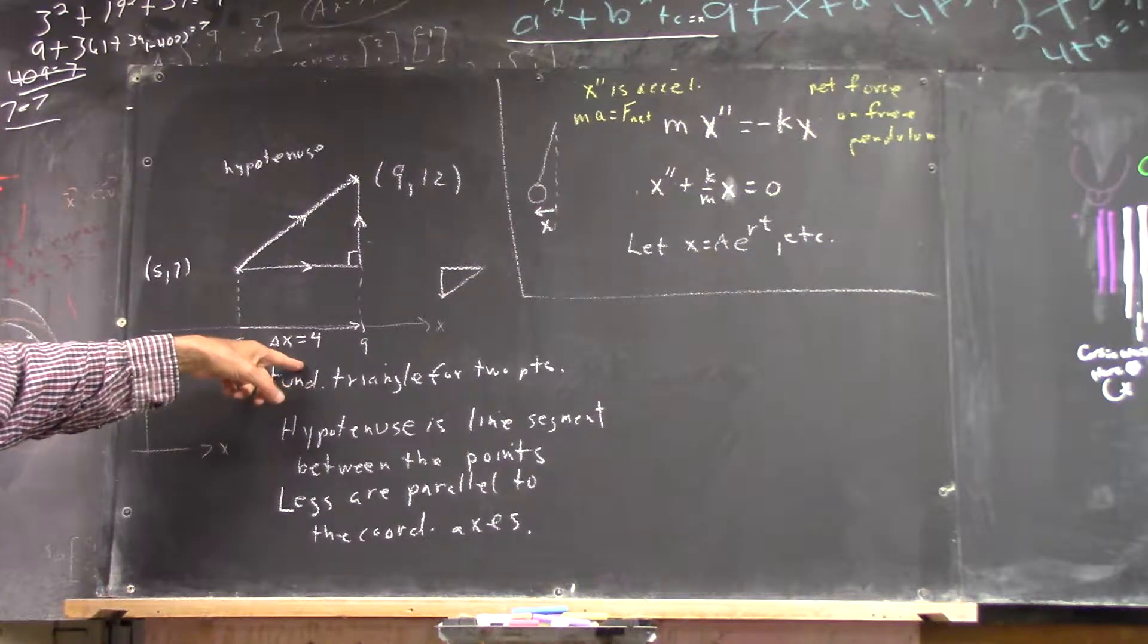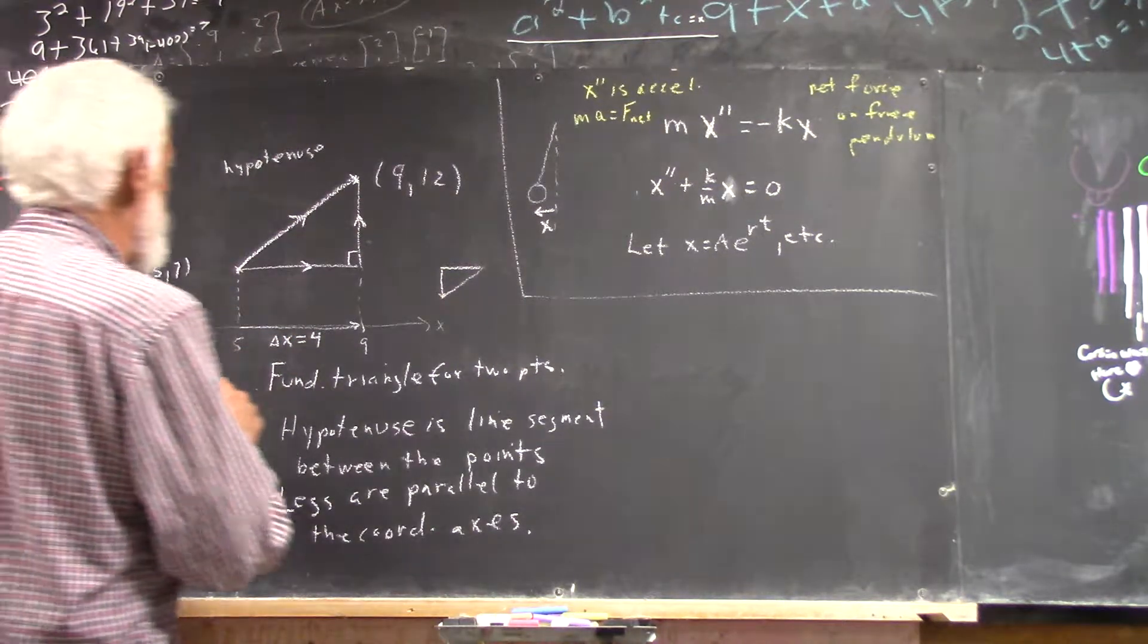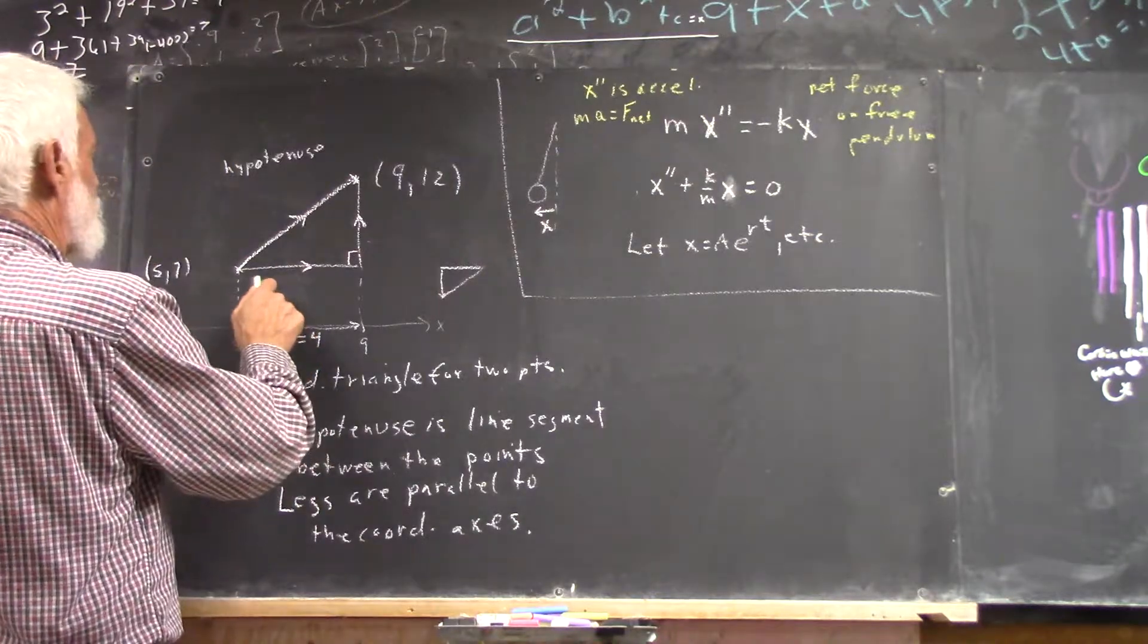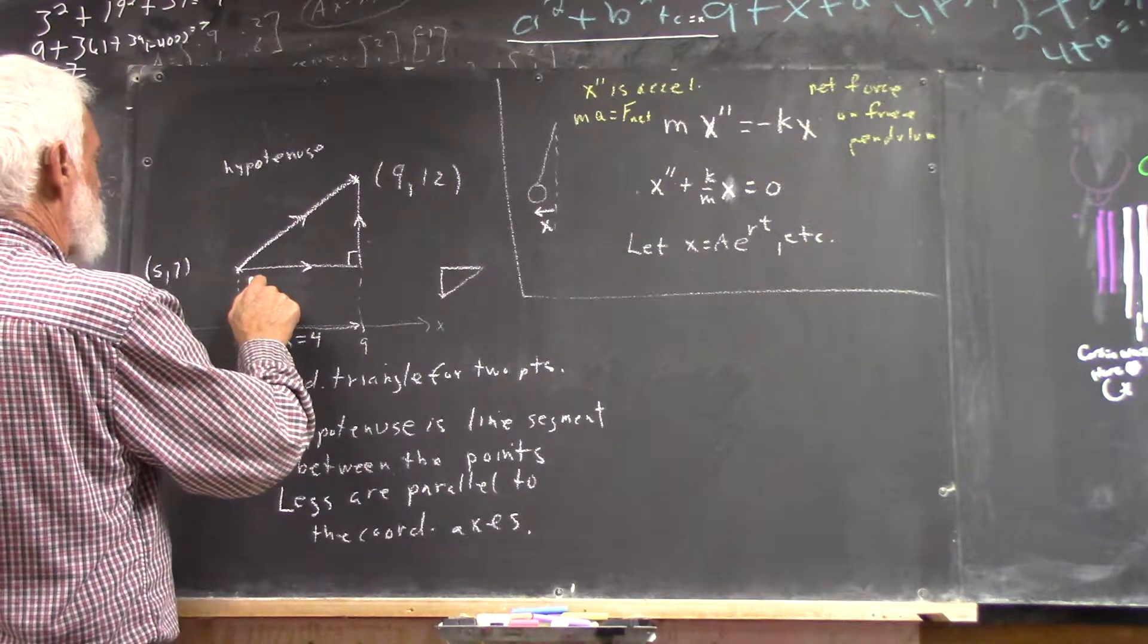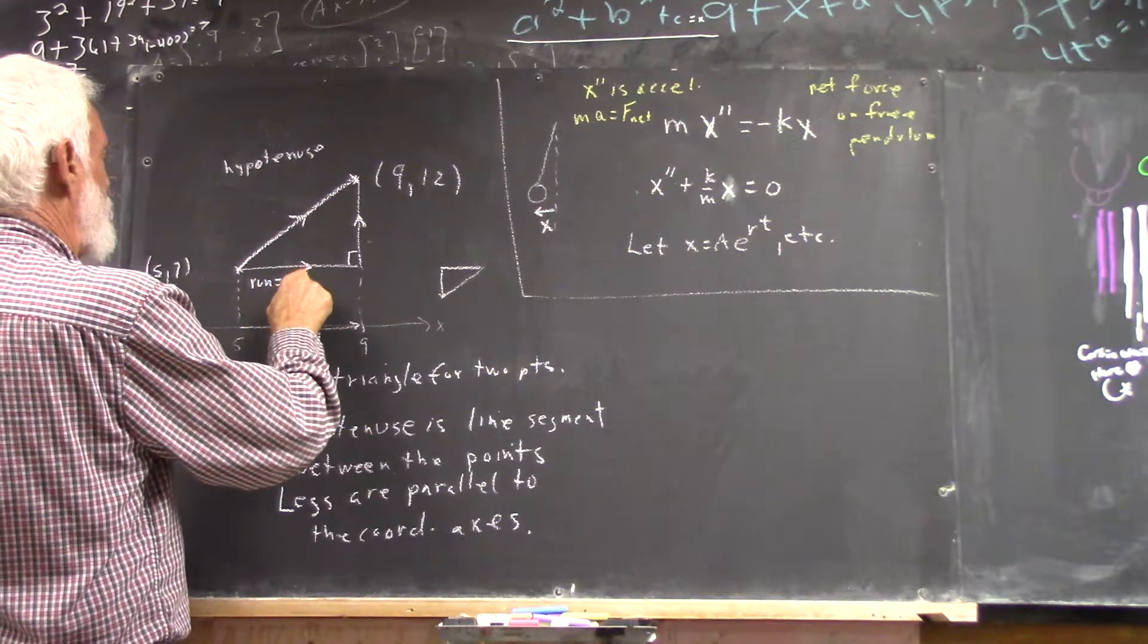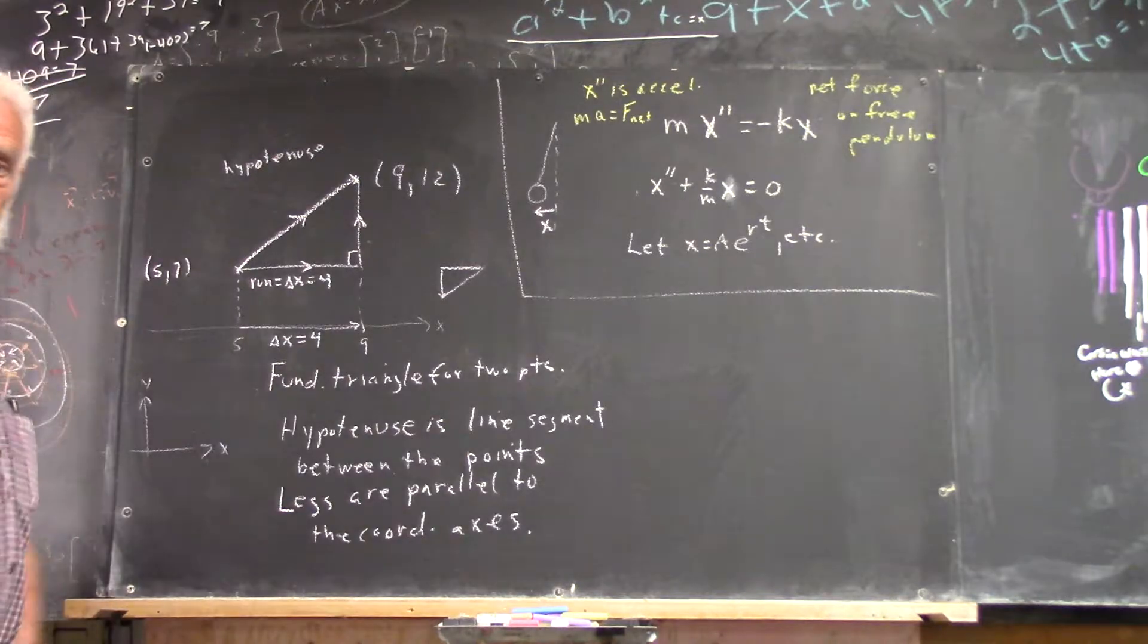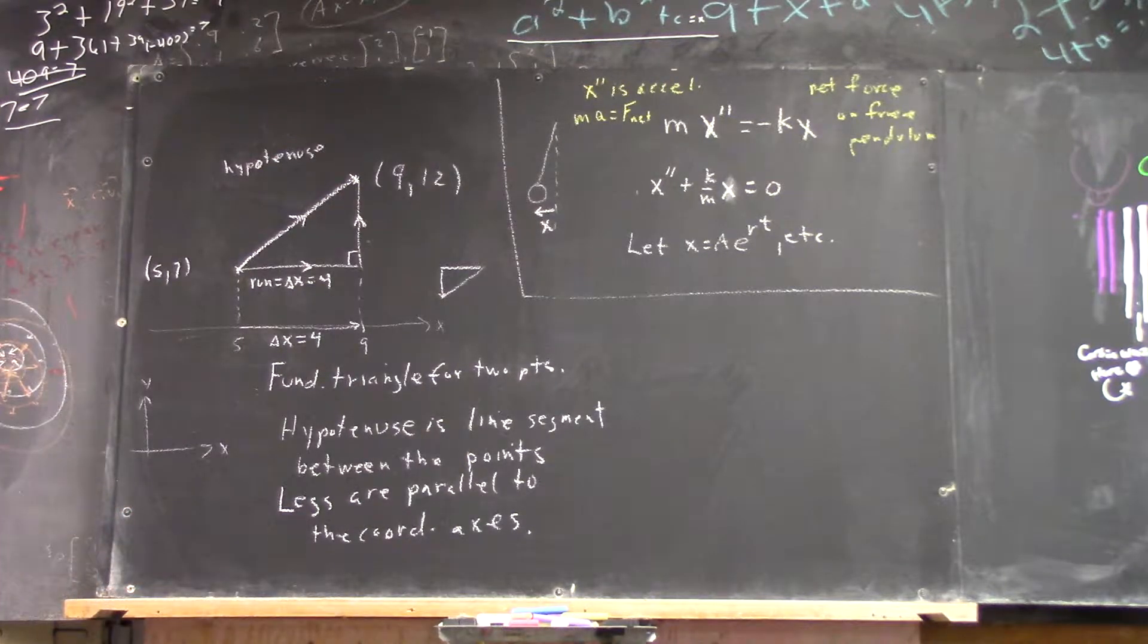So do we understand everything I did there? And then I can write run equals delta x equals four.